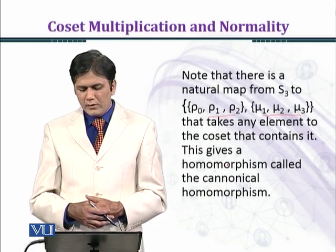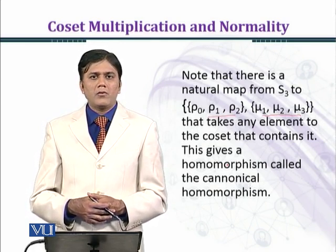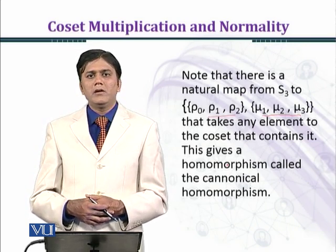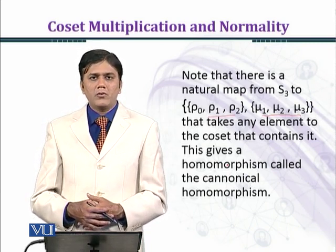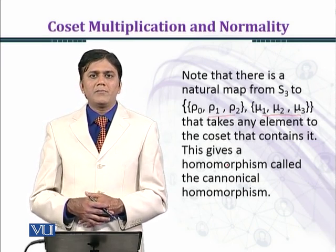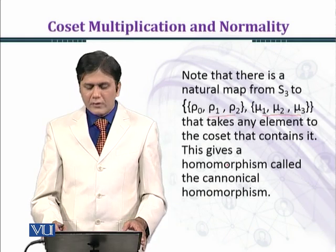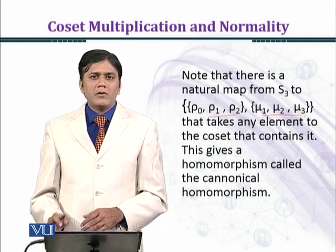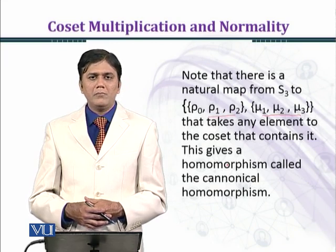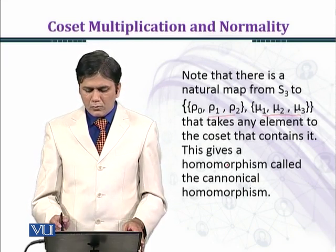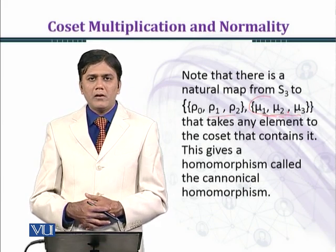On the left side we have the group S3. The quotient group G over H has the identity element as one coset, written as S3 over H. When we apply the permutations for mu1, mu2, mu3, we find the other coset, denoted by mu1H, or equivalently mu2H or mu3H.